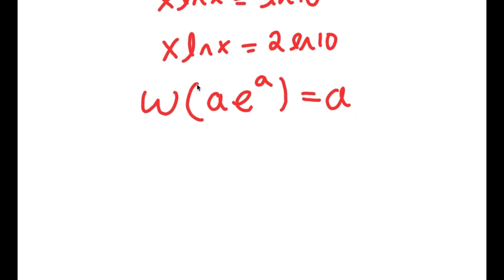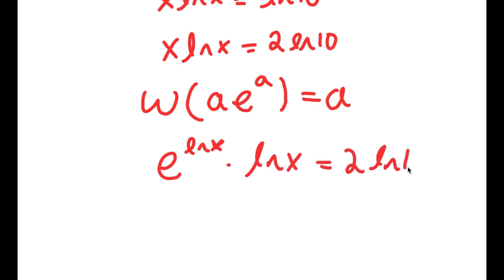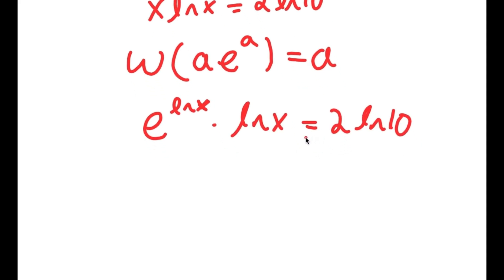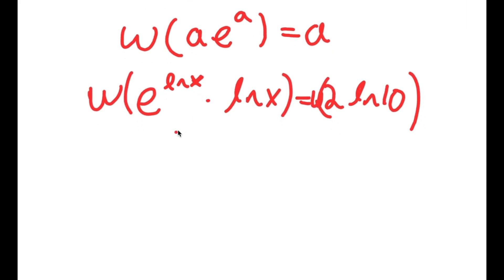I rewrite x as e to the power of ln x, since the e and ln cancel out to give simply x. So I have e to the power of ln x times ln x equals 2 times ln 10, which is now in the form a times e to the power of a. Taking the Lambert W function on both sides, this gives ln x equals W of 2 times ln 10.